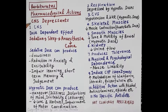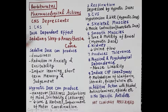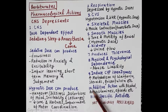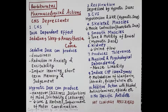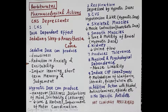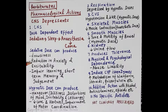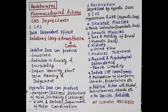Barbiturates are CNS depressants with dose-dependent effects. Low doses produce sedation, higher doses produce sleep, still higher doses produce anesthesia, and very high doses result in coma. Sedative doses cause drowsiness and reduction in anxiety — via alpha-1 GABA-A receptors for sedation and hypnosis, and via alpha-2 and alpha-3 GABA-A receptors for anxiolytic effect. Barbiturates cause impaired learning, short-term memory, and judgment. Hypnotic doses can produce hangover.